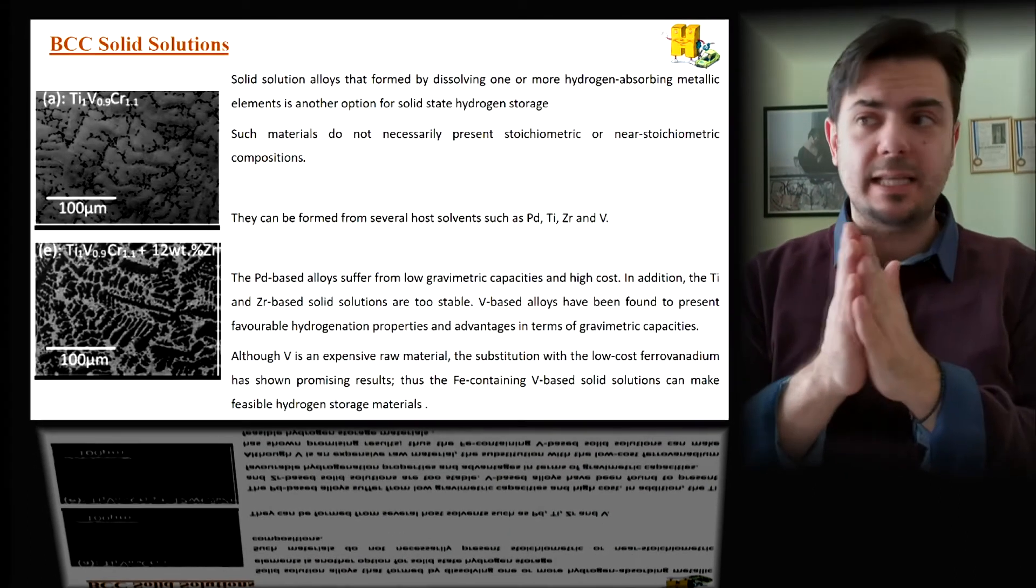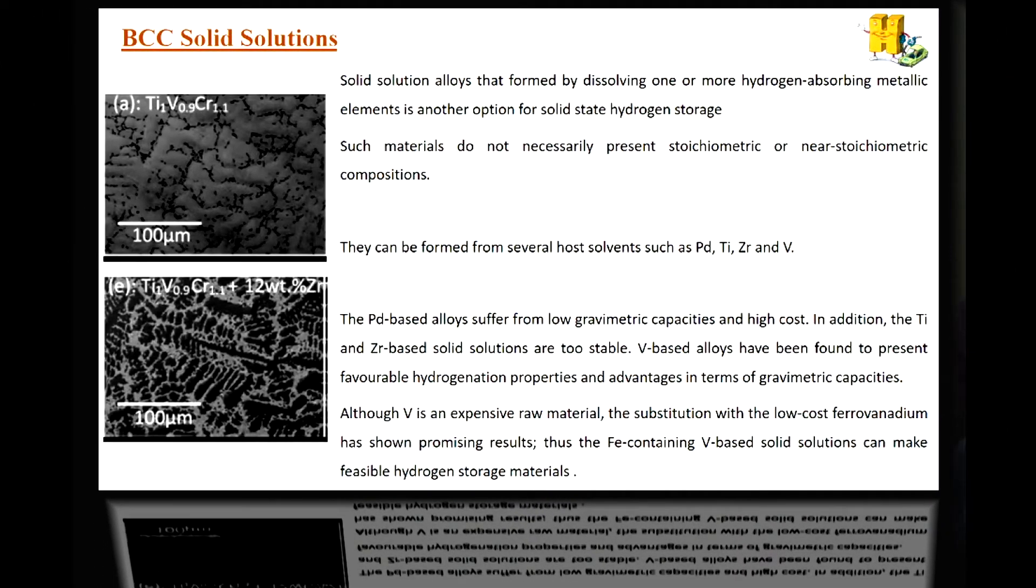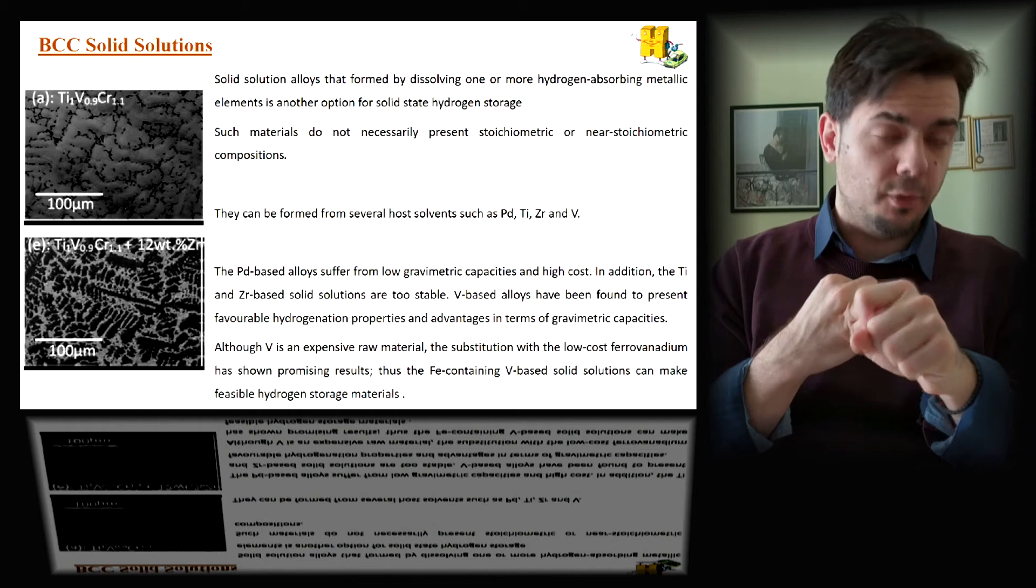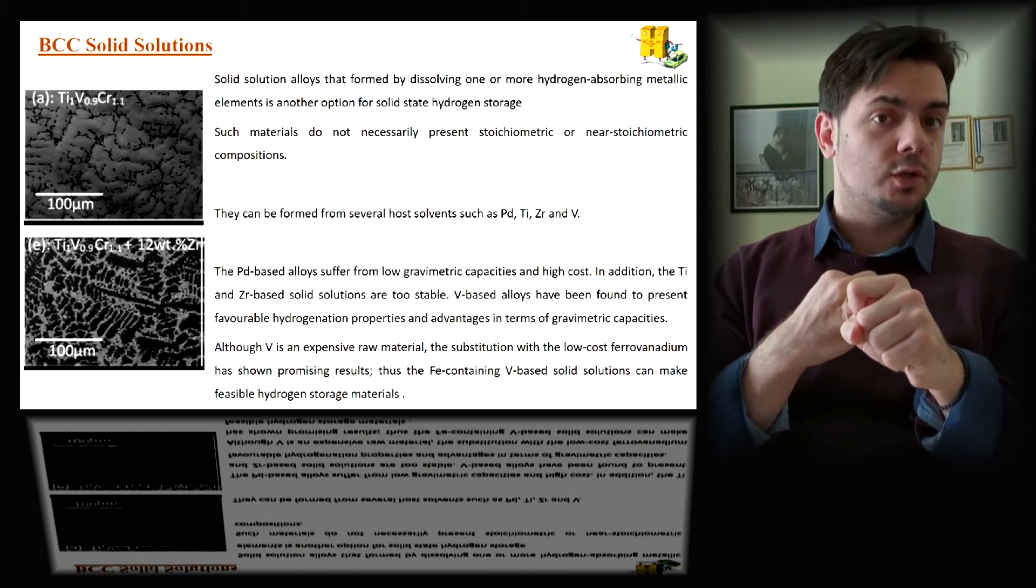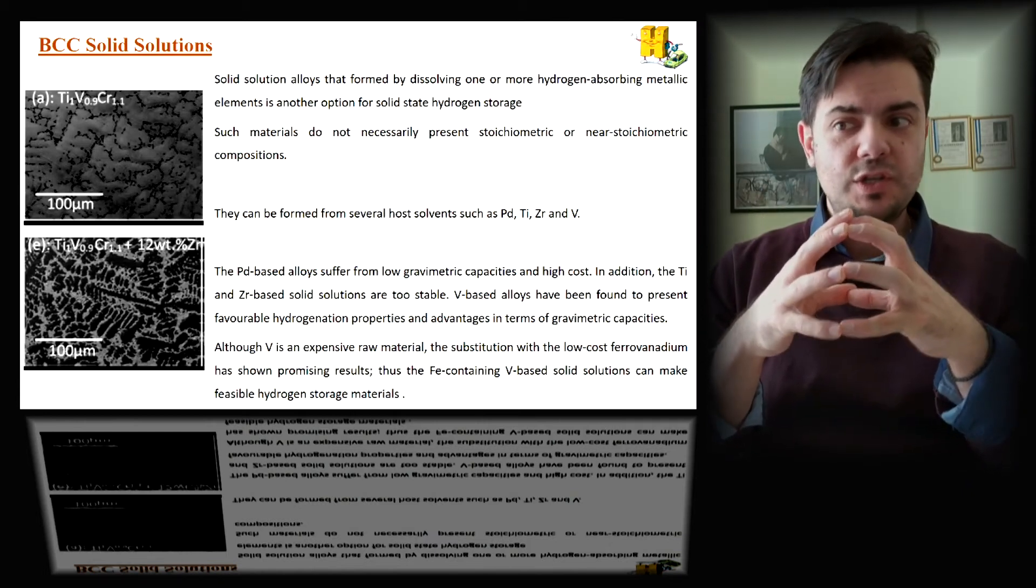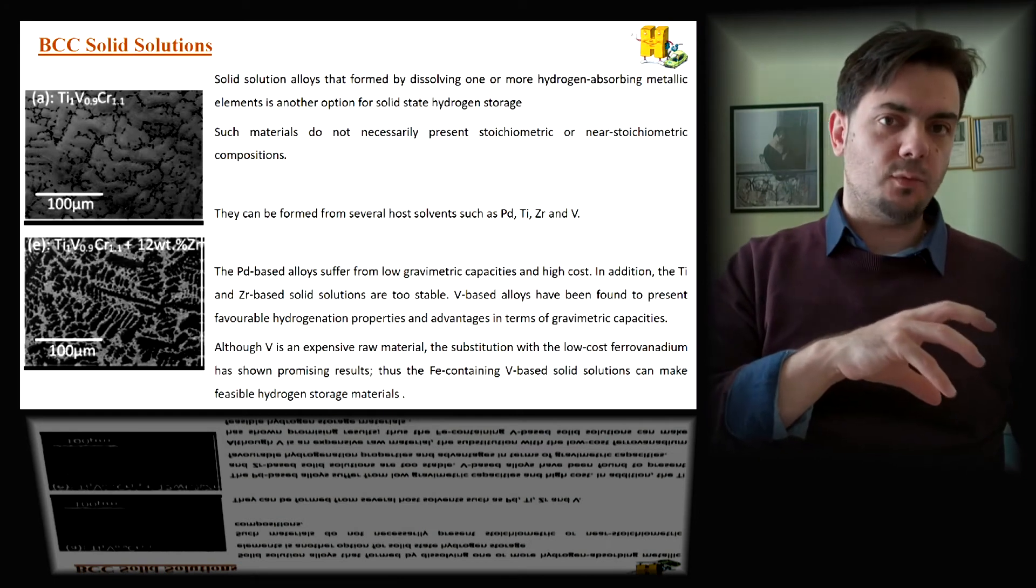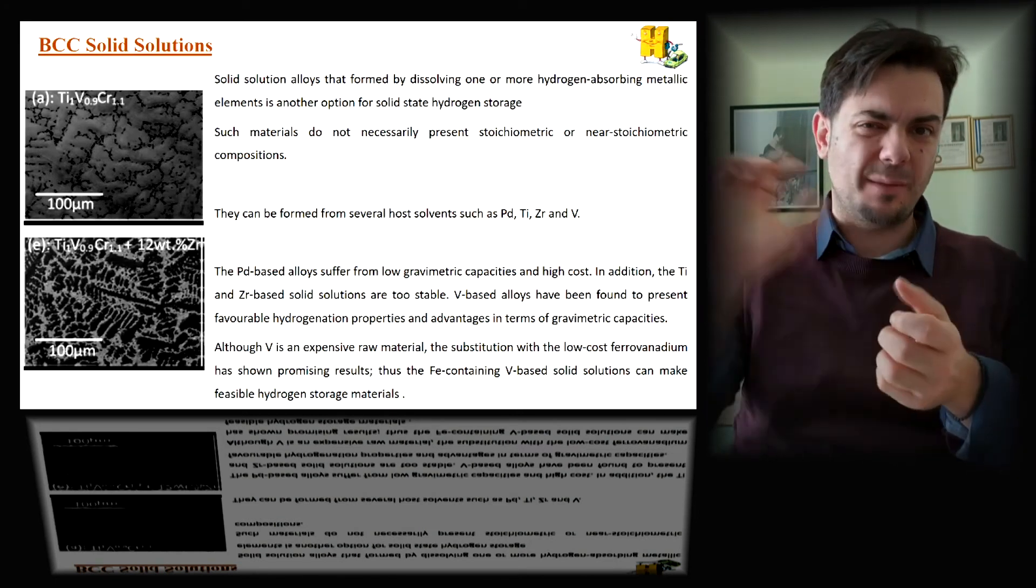Another really nice family is the BCC solid solutions. These alloys are formed when we dissolve one or more hydrogen-absorbing metallic elements. Normally, the host solvents are palladium, titanium, zirconium, and vanadium. We have two main issues with the BCC solid solutions: the relatively low gravimetric capacities and the relatively high cost. Another problem is that the titanium and zirconium-based solid solutions are quite stable. That means when we form the hydride, we need a lot of energy to release hydrogen. On the other hand, the vanadium-based alloys have some really nice properties, but vanadium is quite expensive. So another trick that the community is doing is using ferrovanadium, some iron, to reduce the cost.